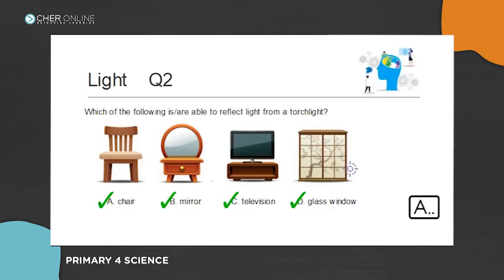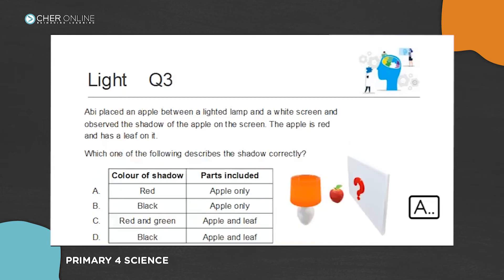An object must be able to reflect light in order for us to see them. Some objects reflect light better, that's all. Next, please.